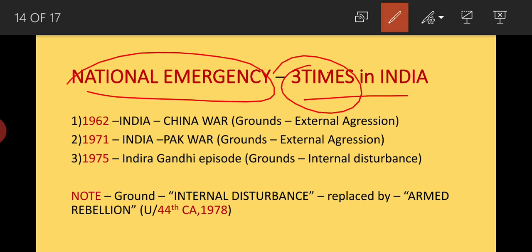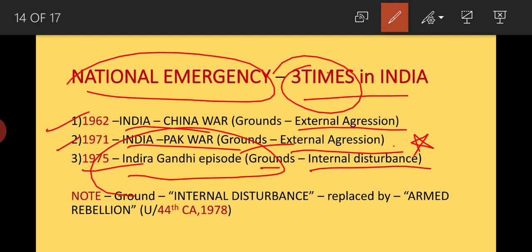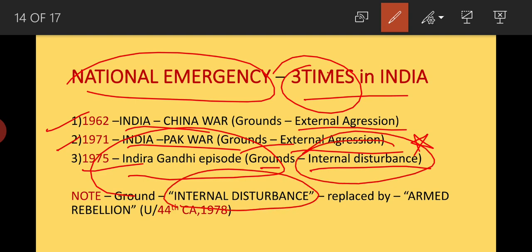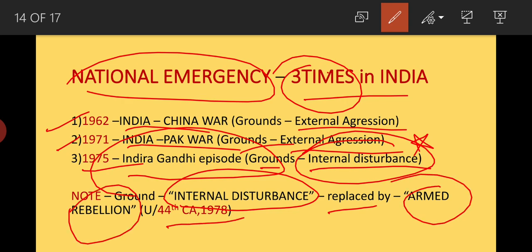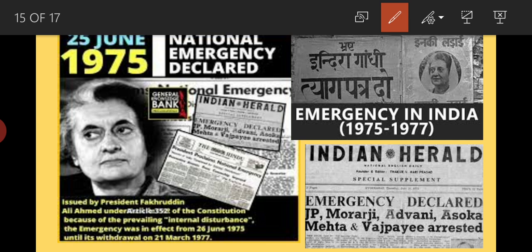The first national emergency was on the ground of external aggression due to the India-China War. The second was in 1971 during the India-Pakistan War when Bangladesh was liberated — the ground was external aggression. The third was in 1975 — the famous Indira Gandhi episode — on the ground of internal disturbance. The national emergency was declared on 25th June 1975 by President Fakhruddin Ali Ahmed under Article 352 of the Constitution.